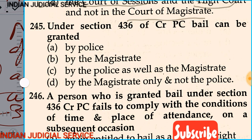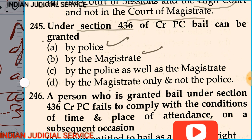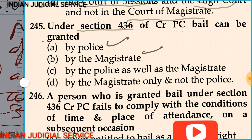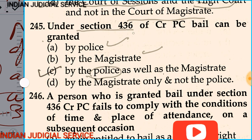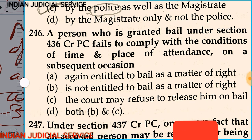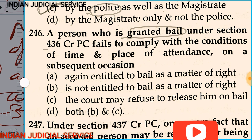Question number 245: Under section 436 of CrPC, the bail can be granted by — option A: police officer, option B: magistrate, option C: police as well as magistrate, option D: by magistrate only. Since section 436 uses the word 'officer,' both police officer and court like magistrate have the power to grant bail under section 436. The answer is option C.